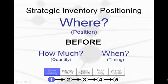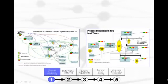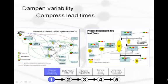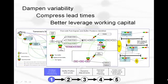So how do we effectively answer the question, where? There are six factors that must be considered in combination, and these factors touch on a variety of cross-functional concerns. Thus, answering the question of where is not something that any one person or function should do. The answer is strategic in nature, and a design must be carefully crafted in order to dampen variability, compress lead times, and better leverage working capital. While it starts out at a strategic level, it must be carried all the way down to the operational level.